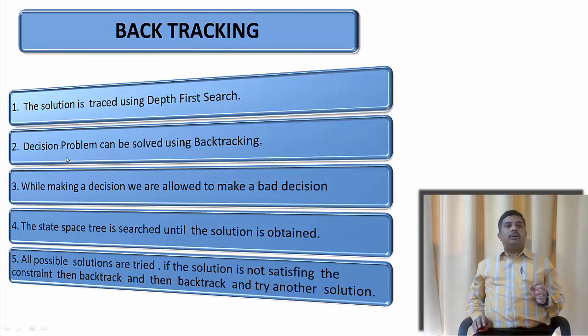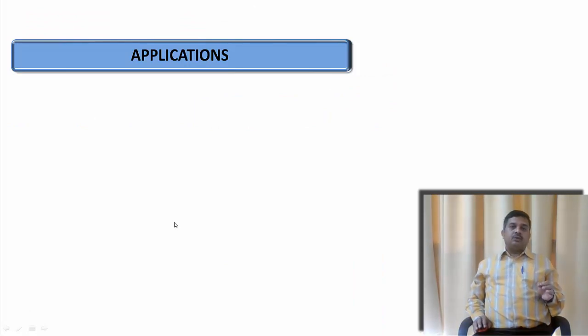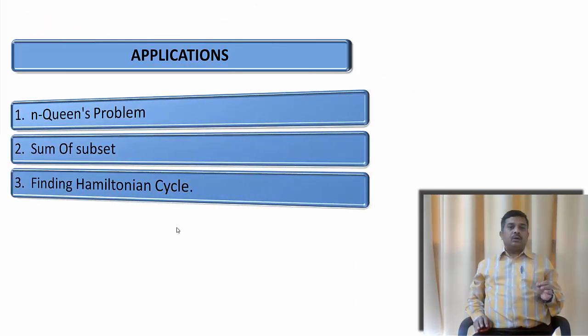Now what basically we are doing here? In backtracking method, the solution is traced using depth first search. The decision problem can be solved using backtracking. While making a decision, we are allowed to make bad decisions. And the state space tree is searched until the solution is obtained, and all possible solutions are tried. If the solution is not satisfying the constraint, backtracking and try other solution.